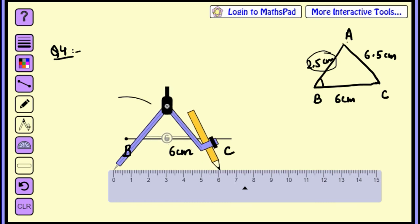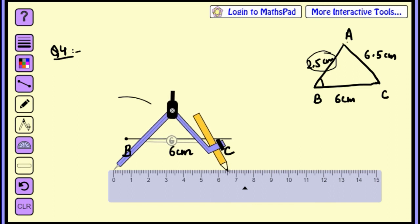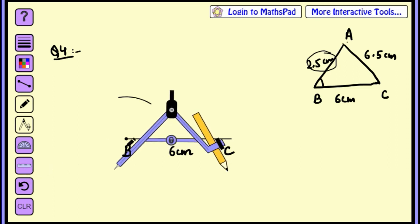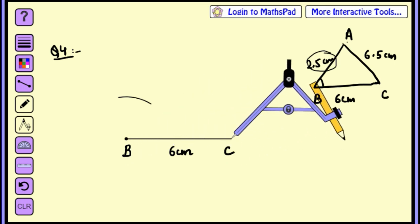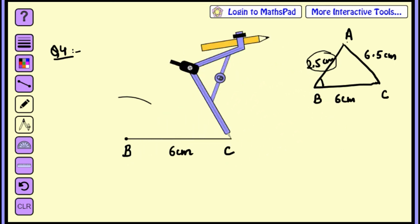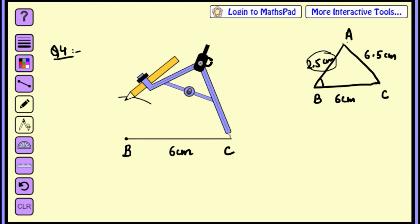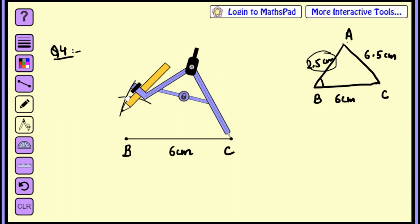Now from C, how do I make arc? 6.5cm. So place the needle of compass at point C and draw an arc of length 6.5cm. Here we are going to intersect this point B and C.